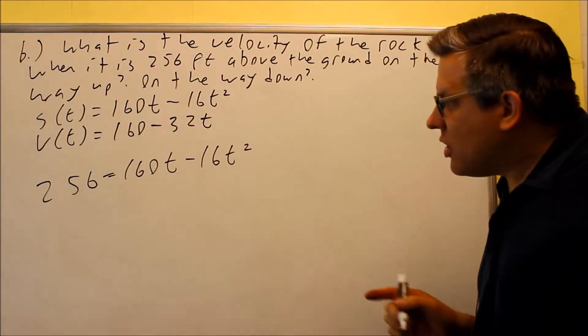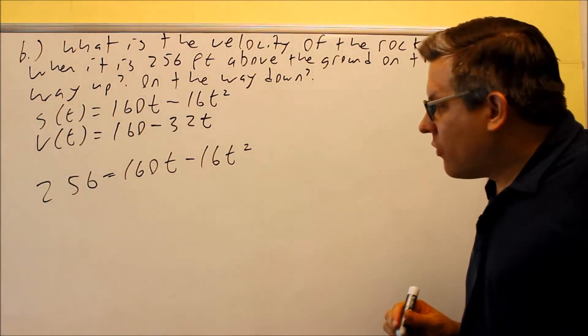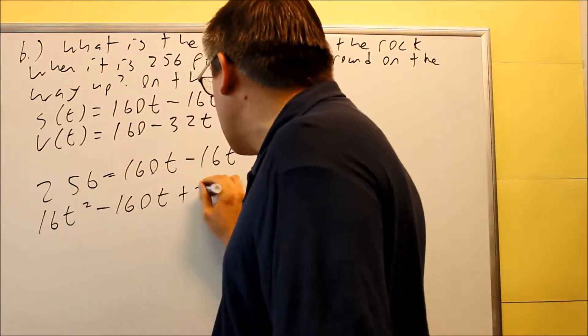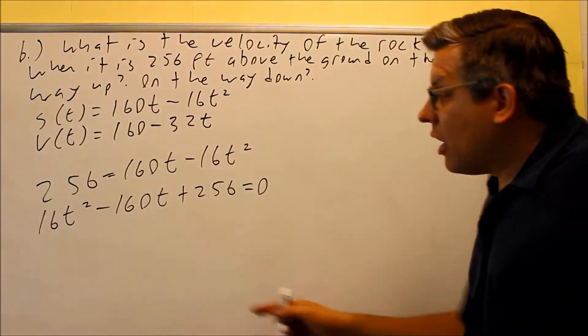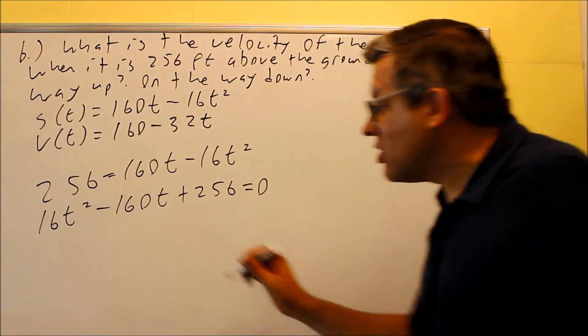So 256 equals 160t minus 16t squared. I want to solve this for t, so I have to get this equal to 0. I'm going to move these two over to the left hand side. I get 16t squared minus 160t plus 256 equals 0. Now I want to factor this, so I can factor out a common factor first. I'll factor out a 16.